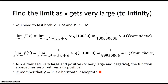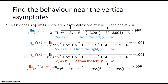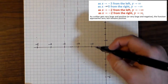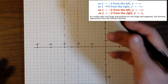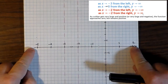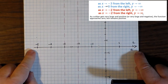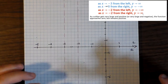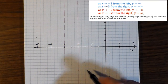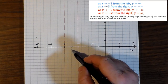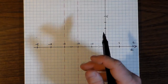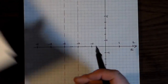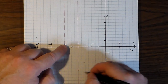Now we use all this information to sketch the graph. We've drawn a graph with vertical asymptotes at minus 2 and minus 3, and a horizontal asymptote exactly on the x-axis. We start by drawing the key point negative 2.5, negative 4, which we established is a local maximum.